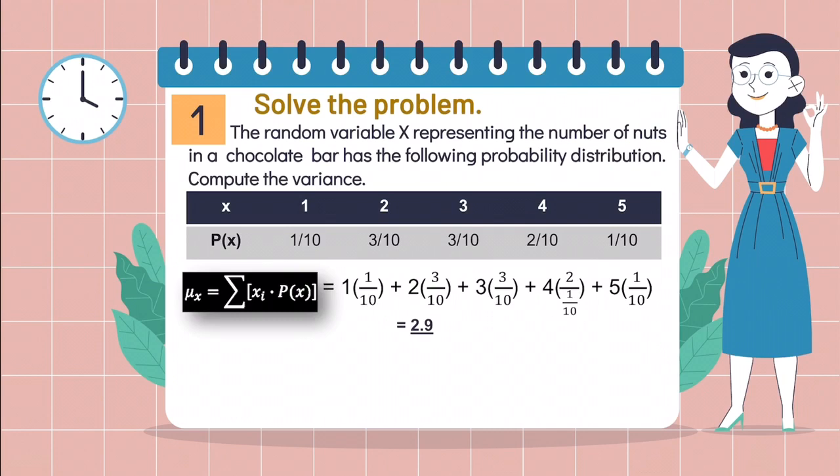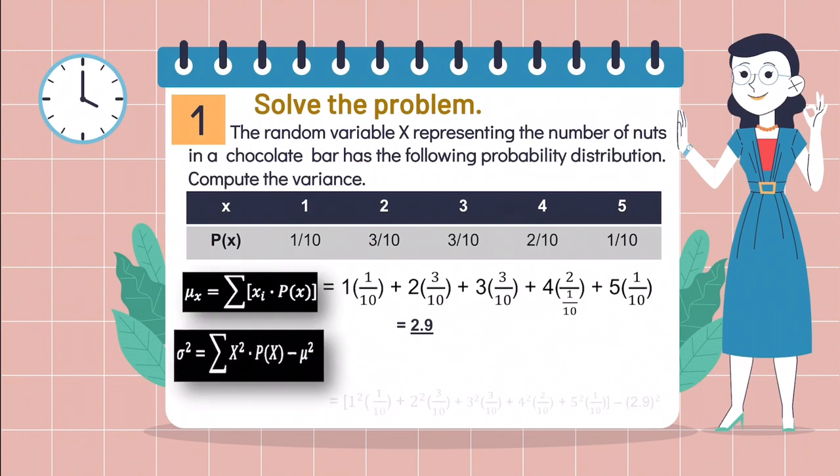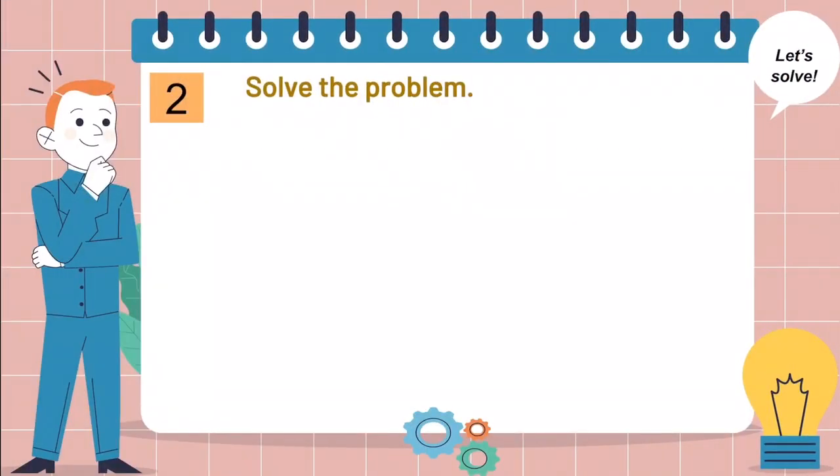Since we have the value of the mean, we can now get the variance of this problem by using this formula. We have to square the product of the value of the random variable and the corresponding probability, get the summation, then subtract it to the square of the mean. We will get an answer, and that is 1.29. Do you still get the clear picture of the lesson?